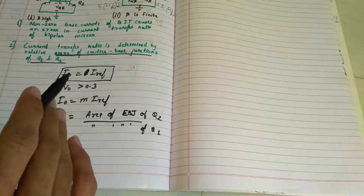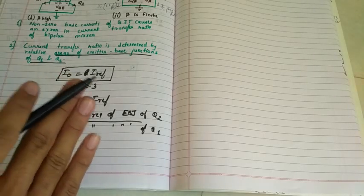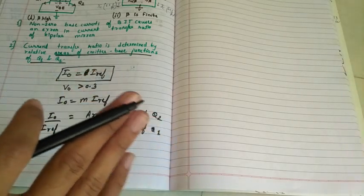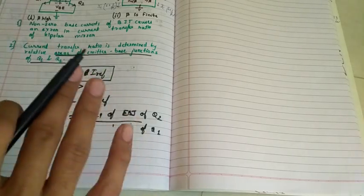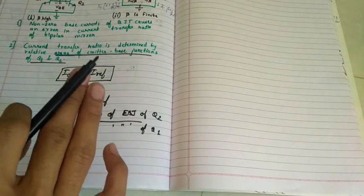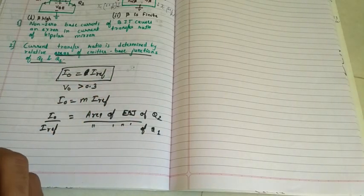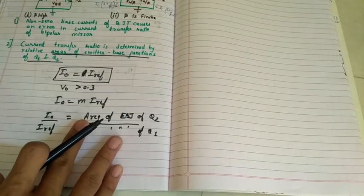This we are doing in VLSI circuits also. In VLSI case, W by L we are matching in series and parallel. Now let's move towards case number 2, that is beta is finite.